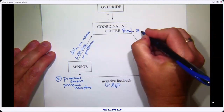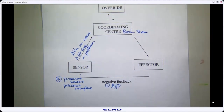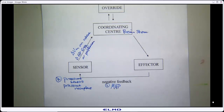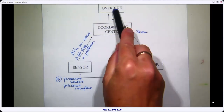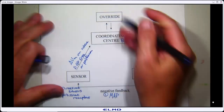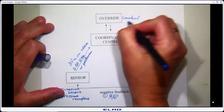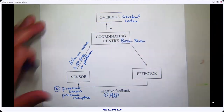That action potential frequency or pattern goes to the coordinating center — the brain stem, lumping in the thalamus and medulla, those lower brain stem areas. That's where we plug this information in — not the conscious area. You're not consciously aware of your blood pressure right now. This is all done at the unconscious level.